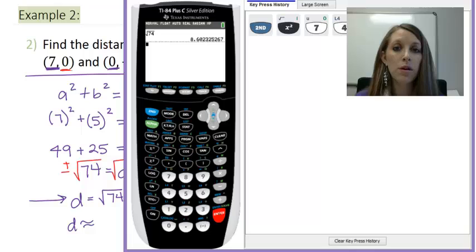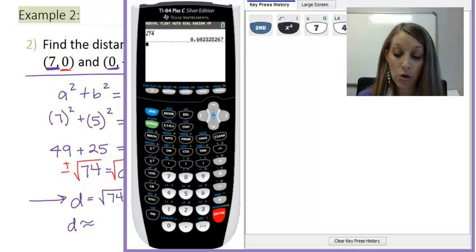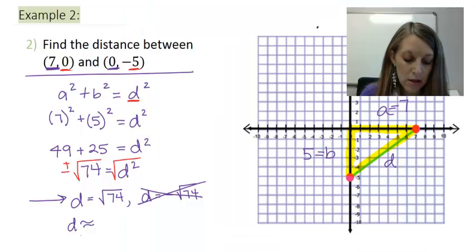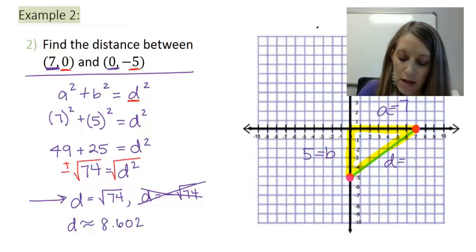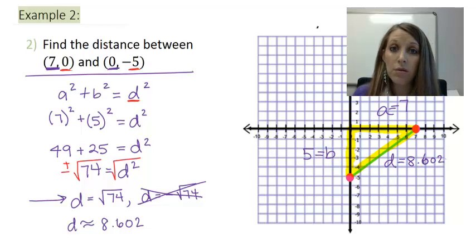Typically, the homework says to round to three decimal places. But make sure you read it so you know exactly what it's looking for. In this one, I get 8.602. So my approximate distance is 8.602. So, that gives me the length of this third side or the length between my two points, the distance between my two points that I'm looking for.